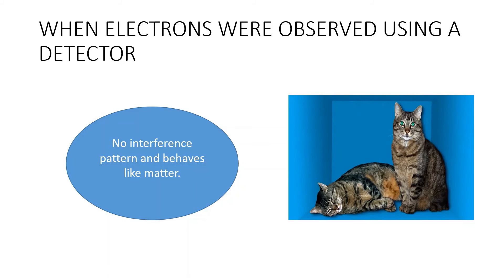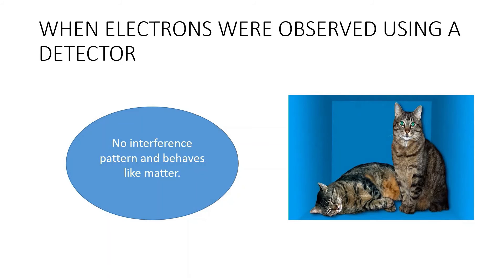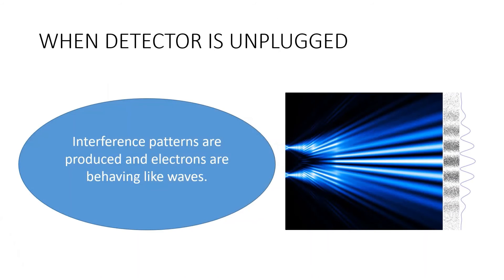Now we will leave the detector there and unplug the detector and run the experiment again. But we can see alternate dark and bright bands in the screen that again interference patterns are produced.